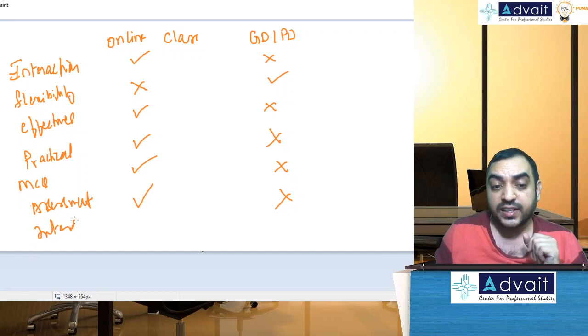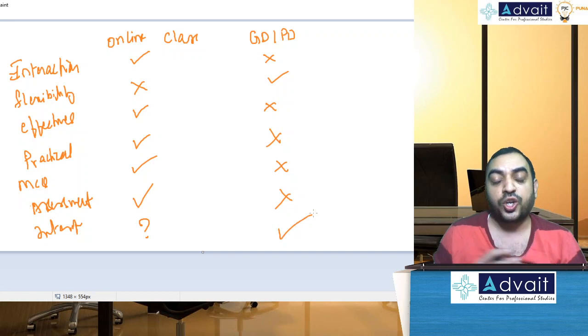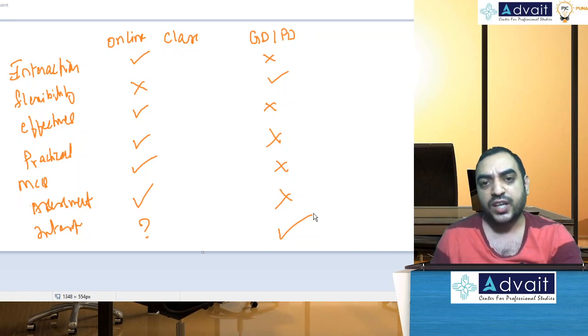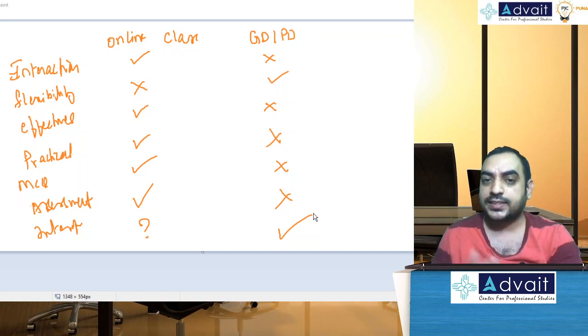But internet connection is required in online class. So if internet is an issue, then your online class will be affected. Google Drive, Pen Drive class will not be affected, that will be more continuous in nature. These are the list of things which I wanted to discuss with you regarding what is useful and what is not useful. Based on this analysis, you please take a call.